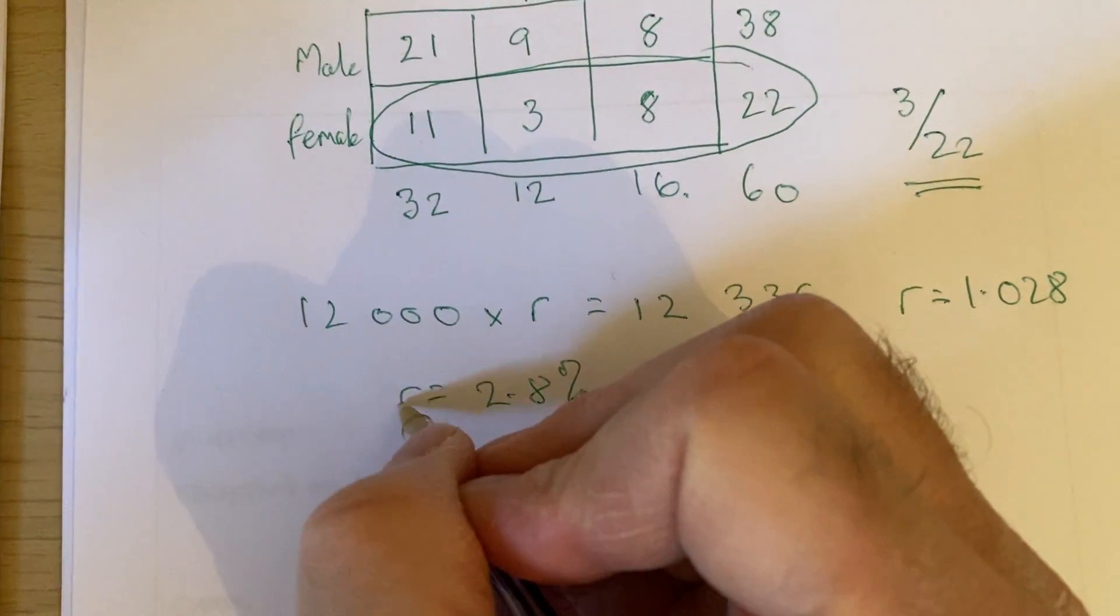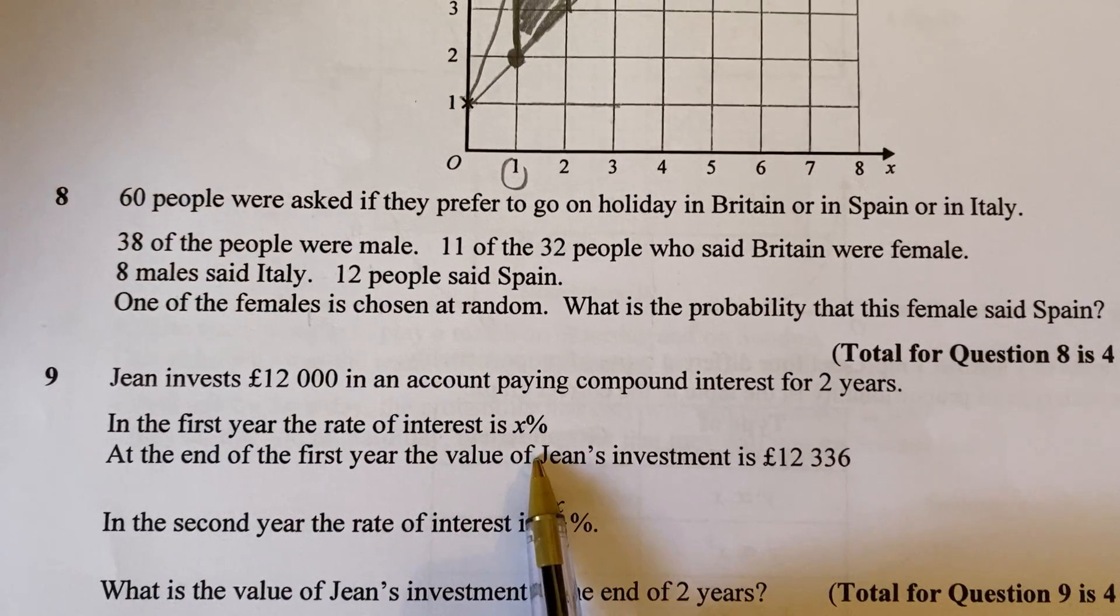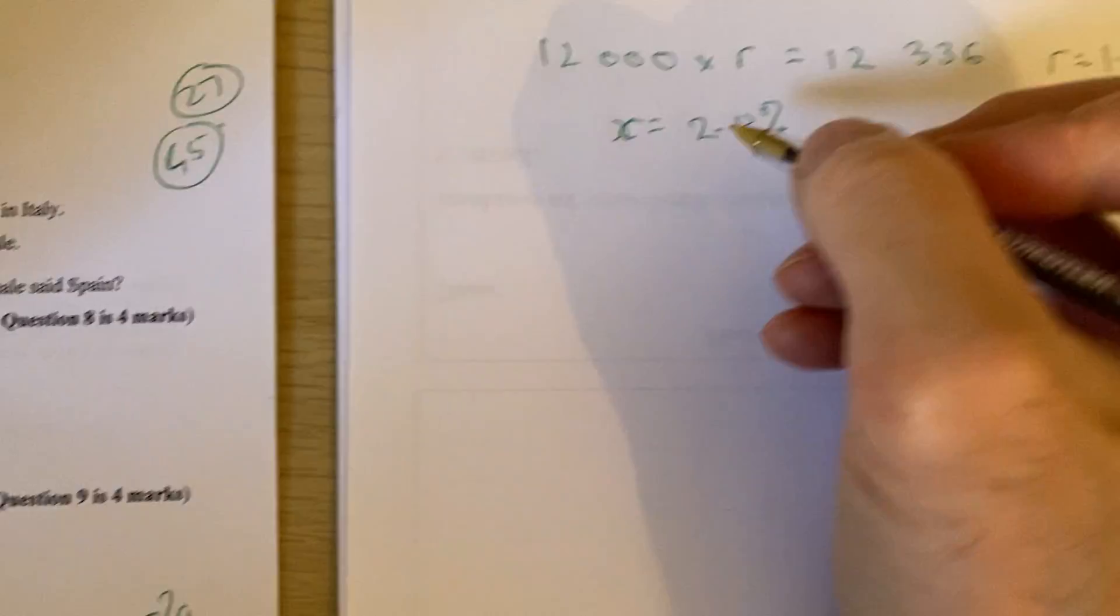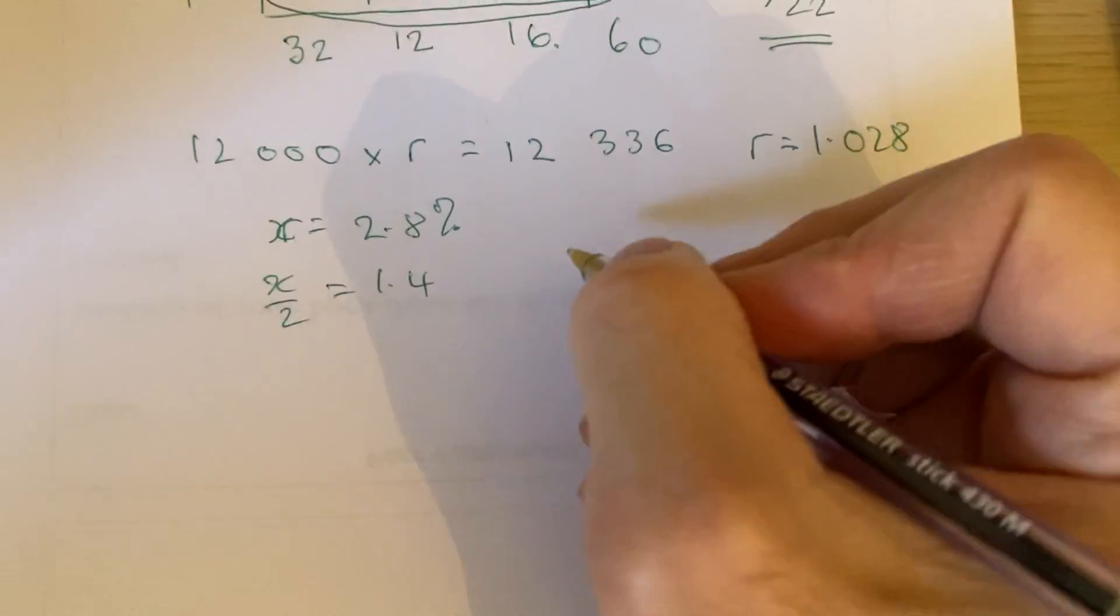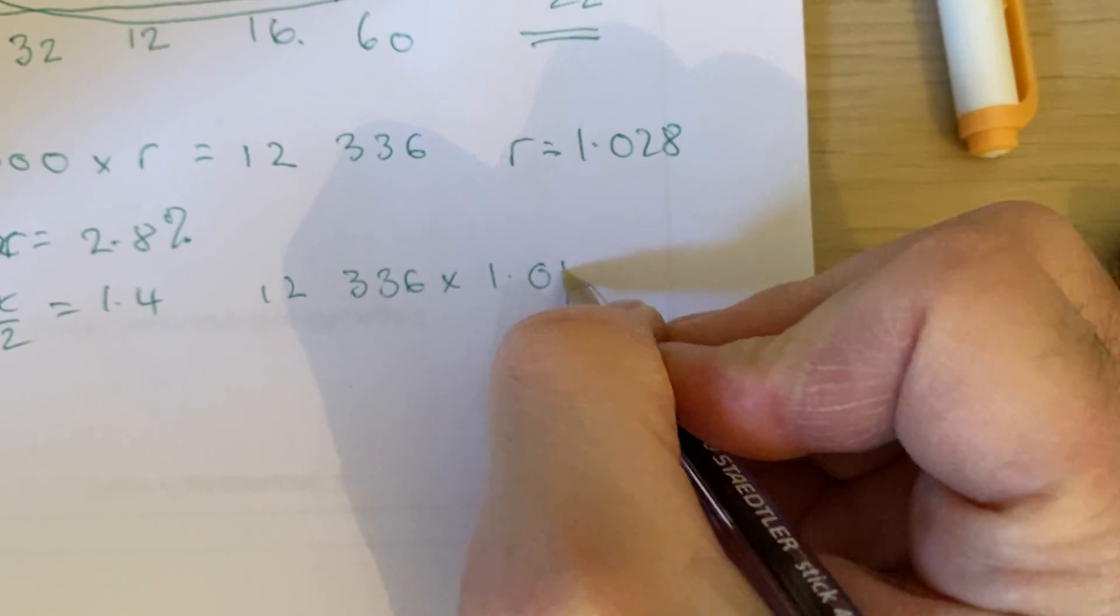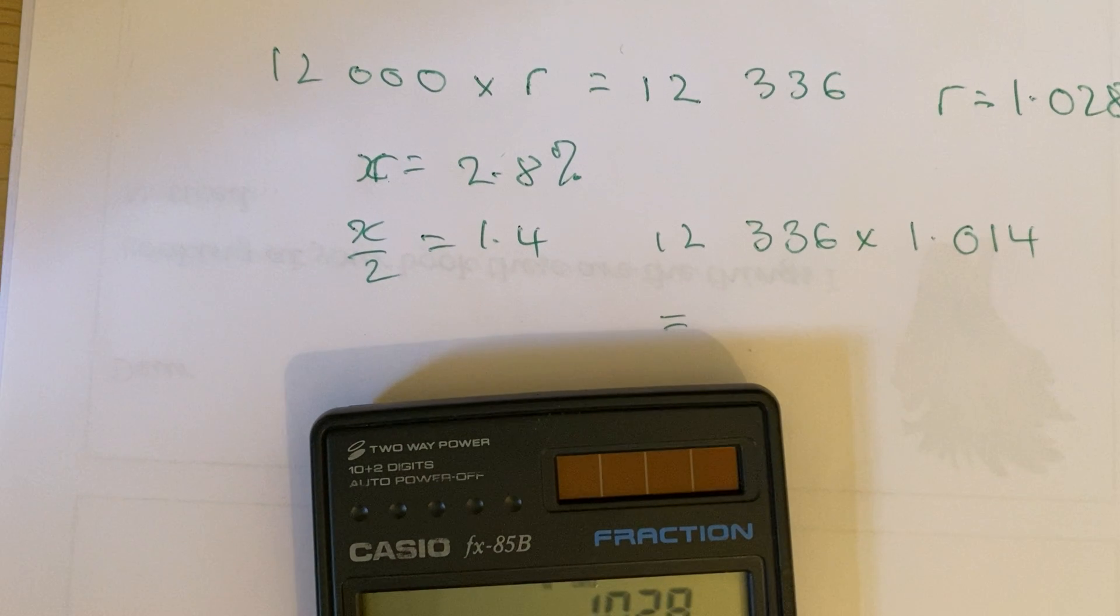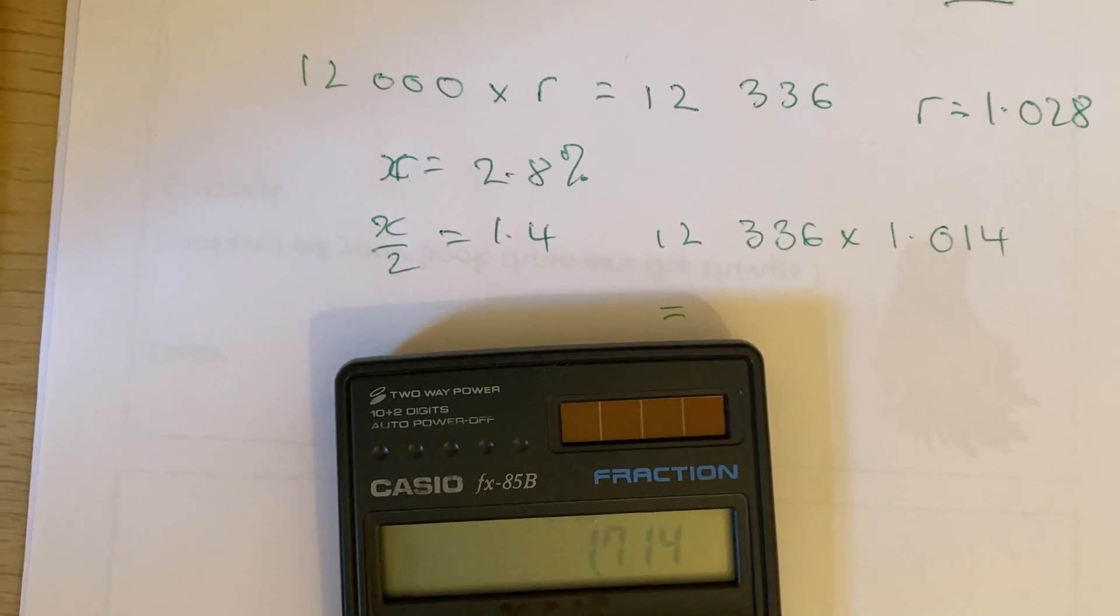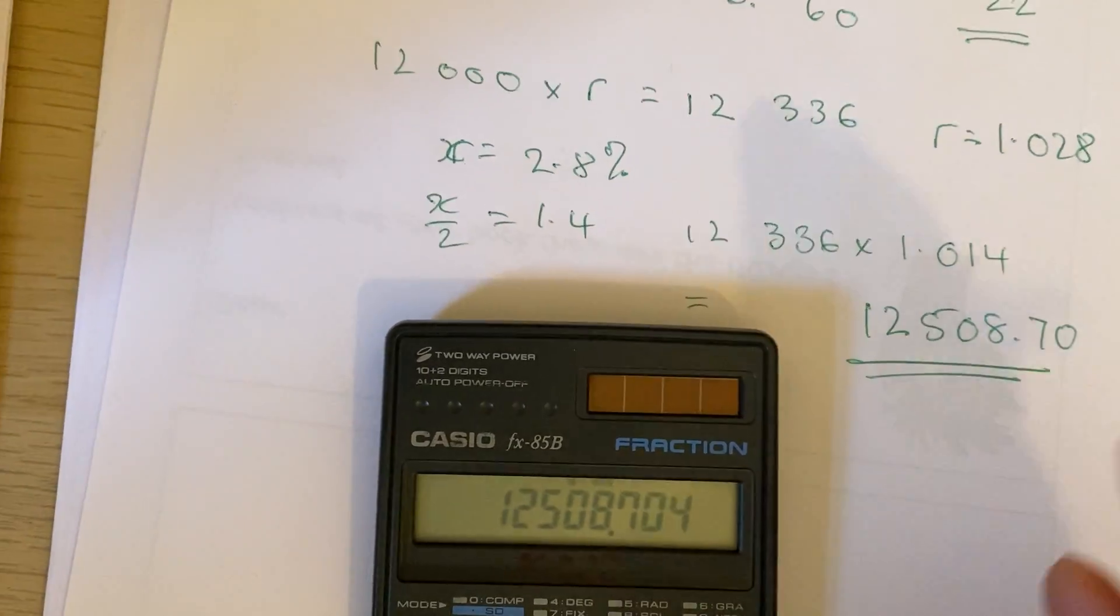Okay, so that was our rate, they call this X. And then it says here, in the second year, the rate of interest is half that. Okay, so second year, it's going to be X over 2, which is 1.4. And so now we put the amount in they had at the end of the first year, times it by a multiplier, which is 1.014. Put that into our calculator. 12,336 times 1.014 equals 12,508 pounds and 70p. Boom.